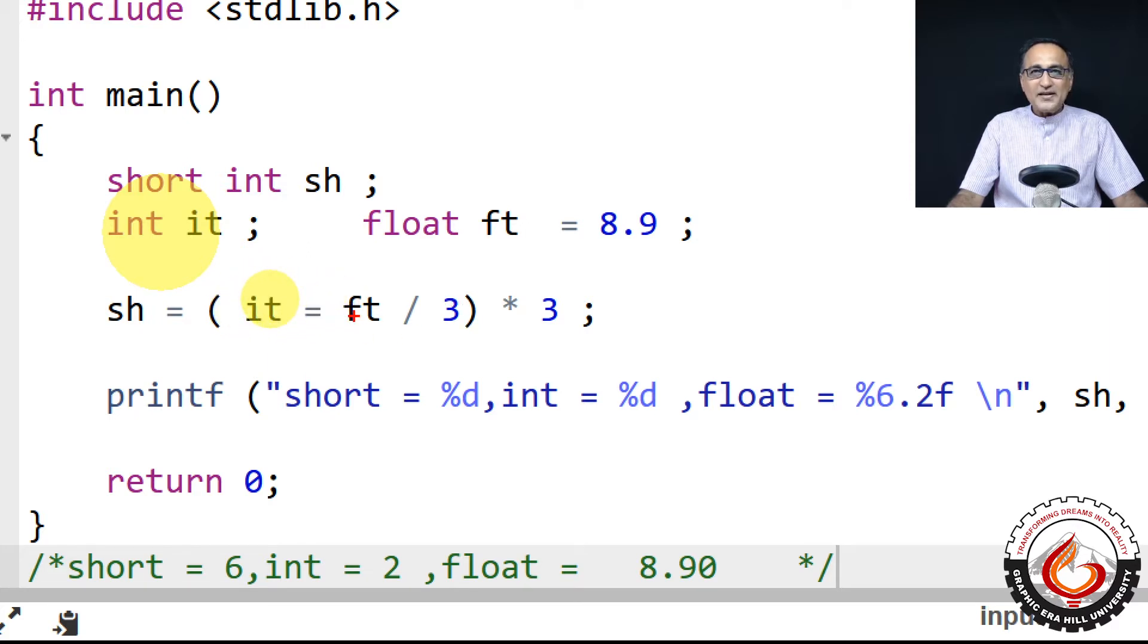Float is 8.9. If you divide 8.9, since this is an integer, this becomes 3.0. 8.9 divided by 3.0 will be something like 2.6 or something like that. Now the result is 2.6, but it is an integer type of variable. So only 2 will get stored in the integer variable.